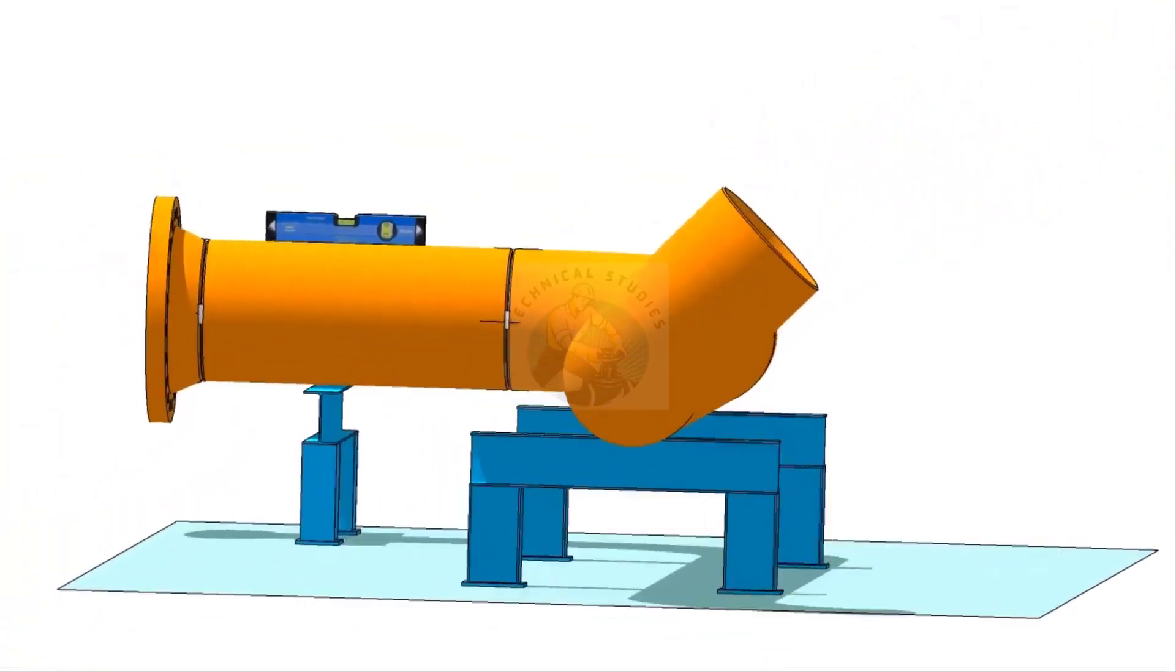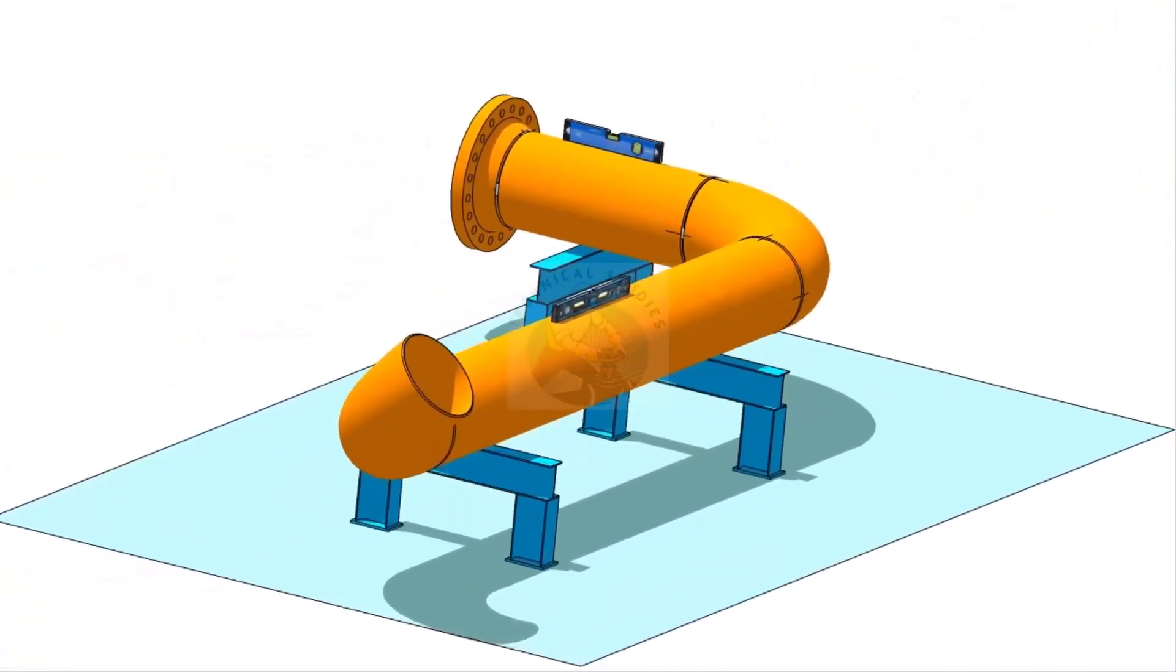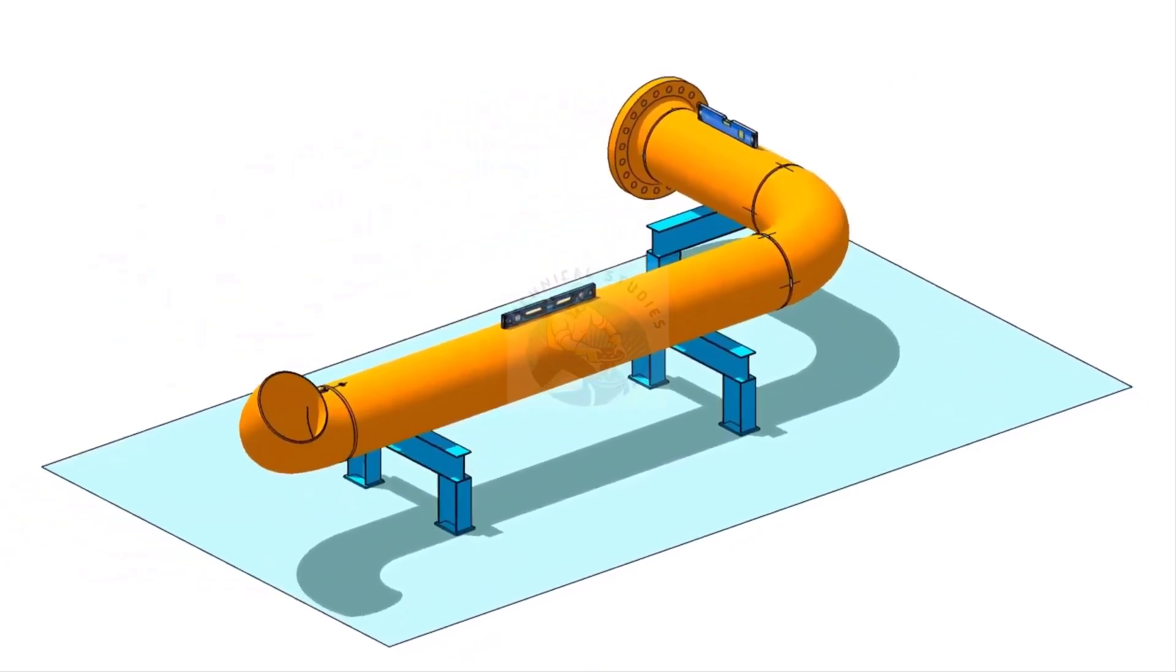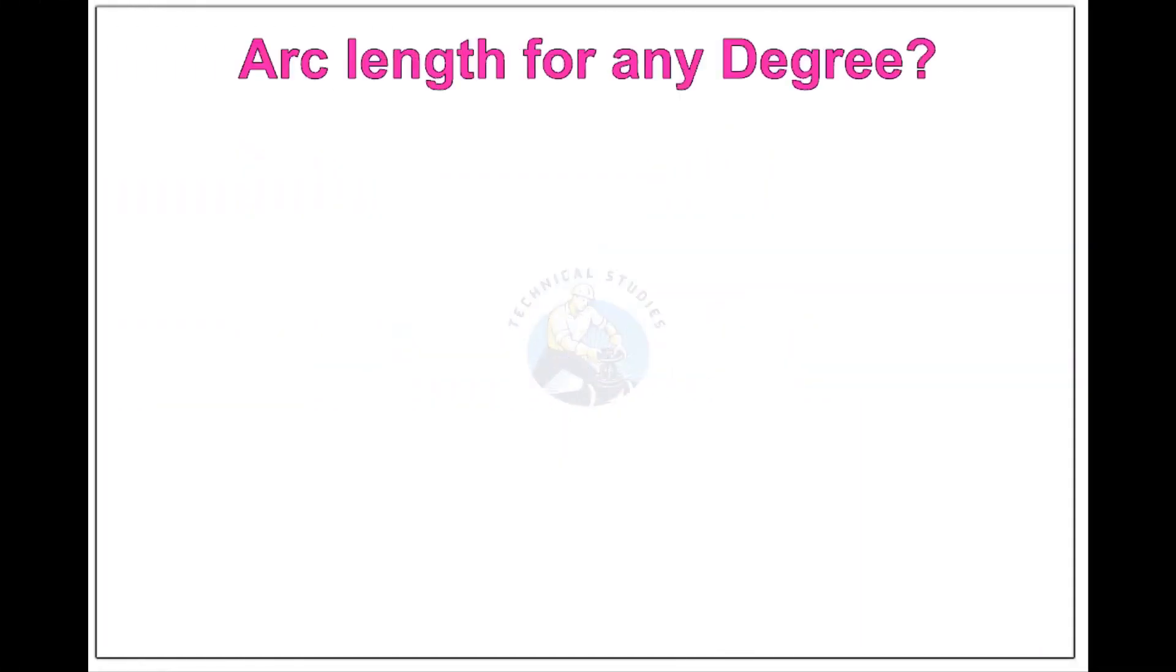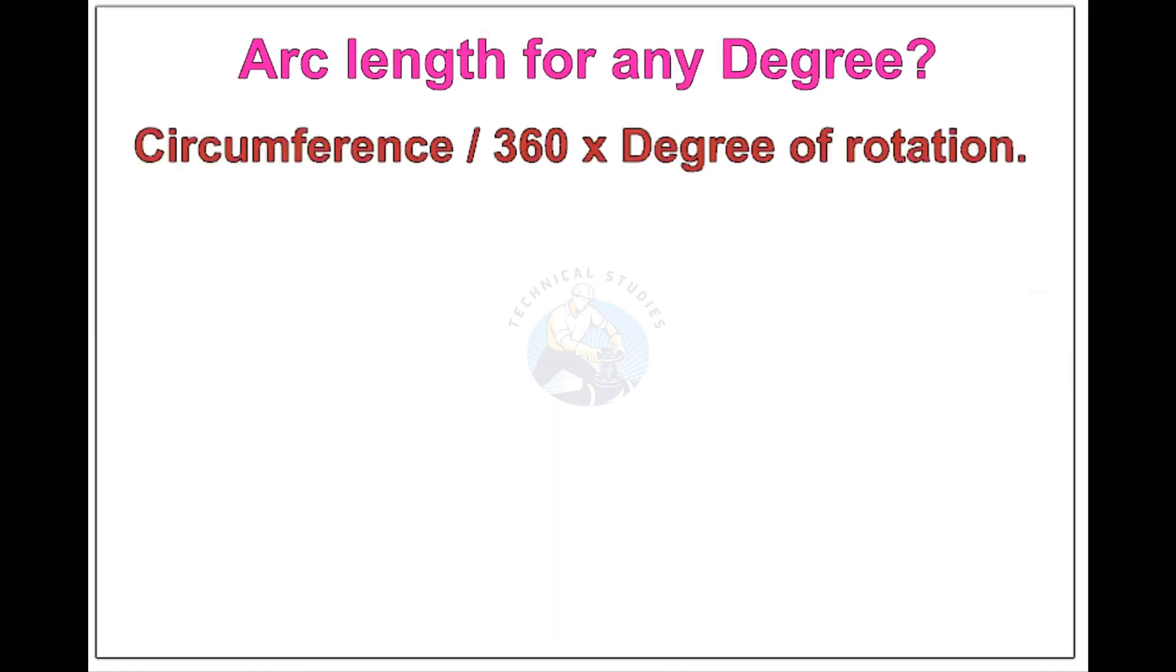Now, see the formula and calculations for finding the arc length of any degree rotation, with example. Arc length of any degree: Circumference of the pipe divided by 360 into the degree of rotation.